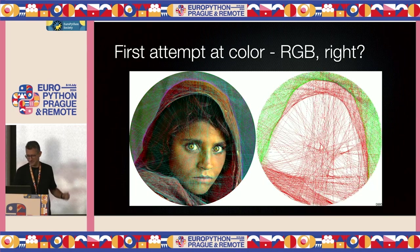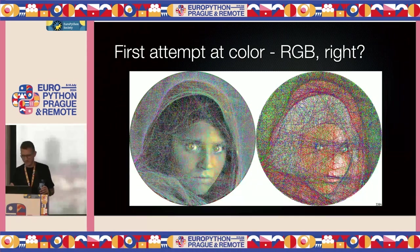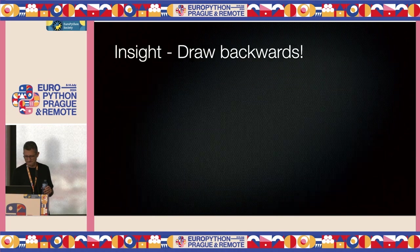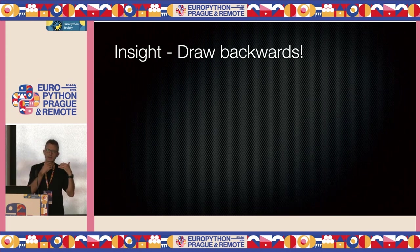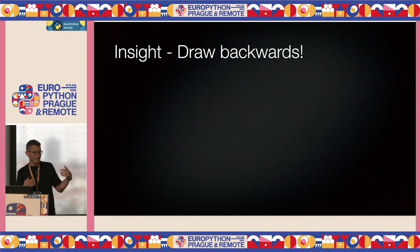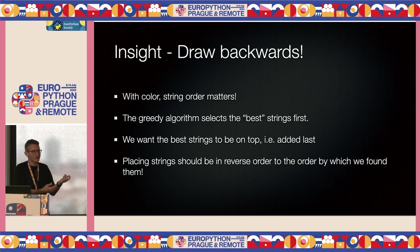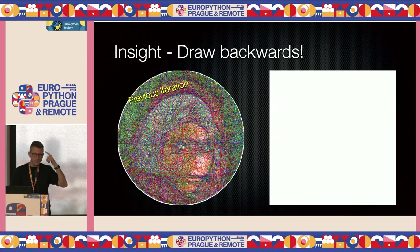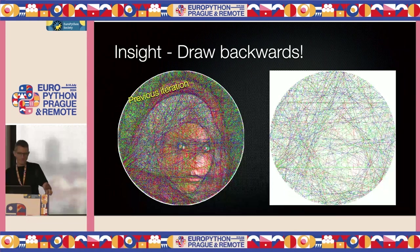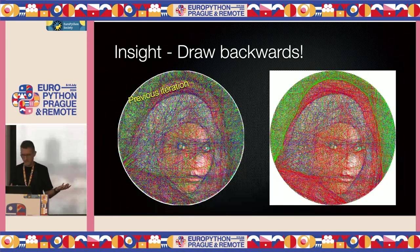Let's go for color. The algorithm is greedy — it selects the best string first. When you actually draw the strings, you want the best string on top, so you can't draw in the order in which you find the strings. With color, unlike black strings which is basically a bitmap, the order matters — the last string is going to be covered by other strings. It took me way too long to figure out: try drawing in the reverse order. And then I had regions of color.